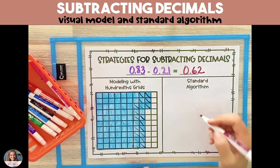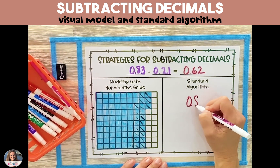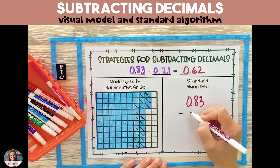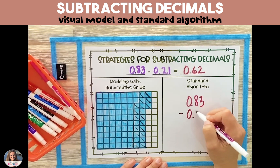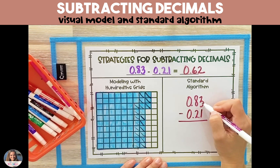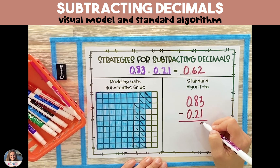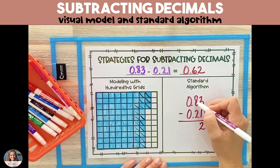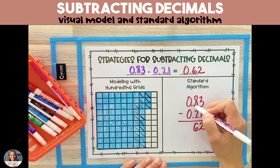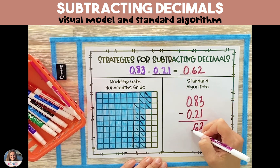For the standard algorithm, we're going to subtract just like we would with whole numbers. We'll line up our two decimal numbers by place value, making sure to line up the decimal point, then subtract just like we would with whole numbers.